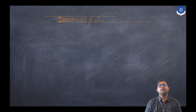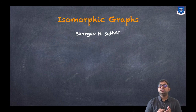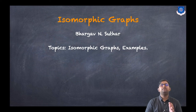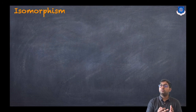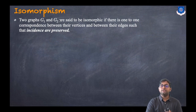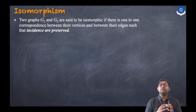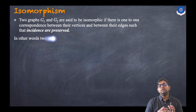Hey everyone, this is Bhargava Suthar and today we will discuss isomorphic graphs. In this session we will discuss what is an isomorphic graph and how to check whether two graphs are isomorphic or not. Two graphs G1 and G2 are said to be isomorphic if there is a one-to-one correspondence between their vertices and between their edges such that incidences are preserved.